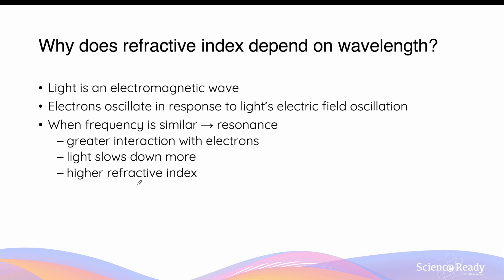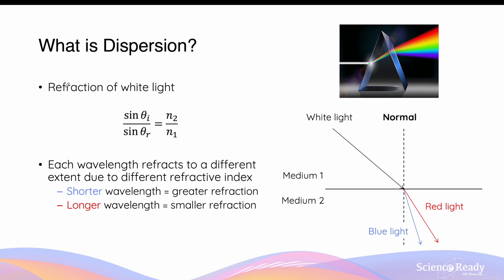Dispersion is the result of refraction when white light passes through a medium, typically glass. In the top right diagram we have a beam of white light consisting of all colors of different frequencies and wavelengths. When this passes from air into a glass prism, because white light consists of different colors, each color undergoes refraction to a different extent, allowing the different colors to be separated into a spectrum. This separation of colors into a rainbow spectrum is known as dispersion.